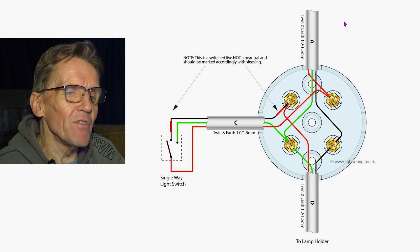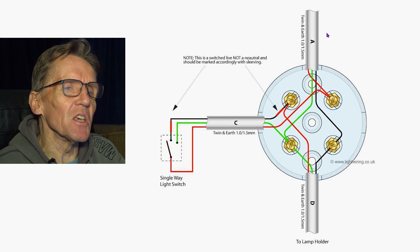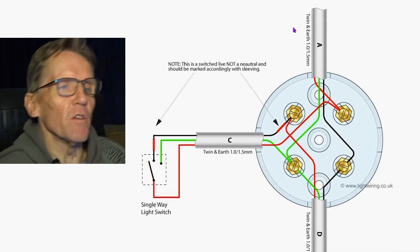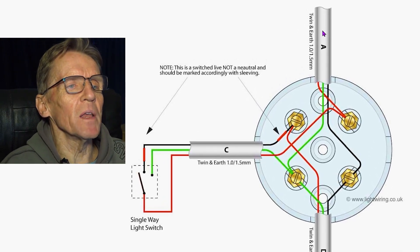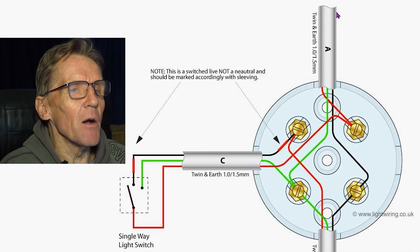What we have is what we call a loop-in system, where every light fitting is joined by a cable that comes out of the fuse box and it doesn't go back to the fuse box. So it's not a ring main, it's just a loop-in system. If we look at this coming in now, we've got A.